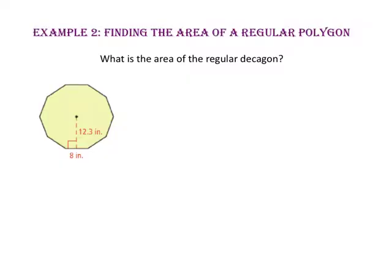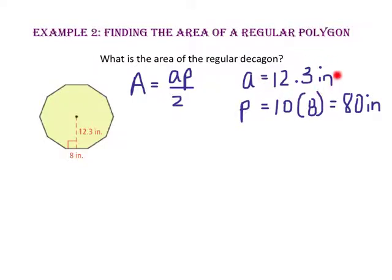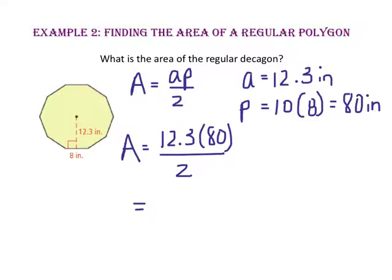In example 2, we will find the area of a regular polygon. What is the area of the regular decagon? Let's start with the formula: area equals the apothem times the perimeter divided by 2. The apothem is the perpendicular distance from the center to one of its sides, so our apothem is 12.3 inches. The perimeter is 10 sides times the length of one side, which is 8, giving us 80 inches. Substituting, 12.3 times 80 is 984, divided by 2 is 492. So the area of our regular decagon is 492 inches squared.